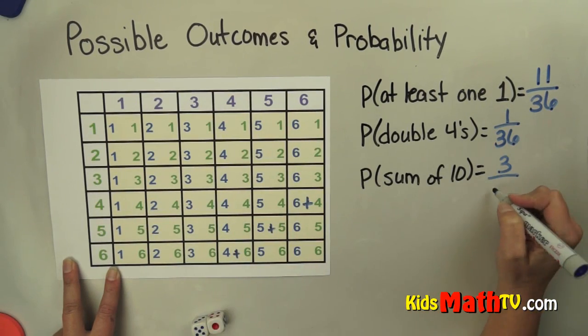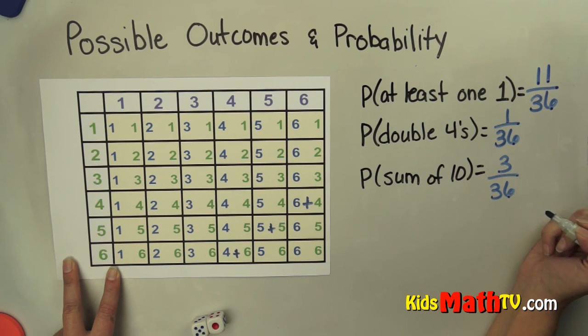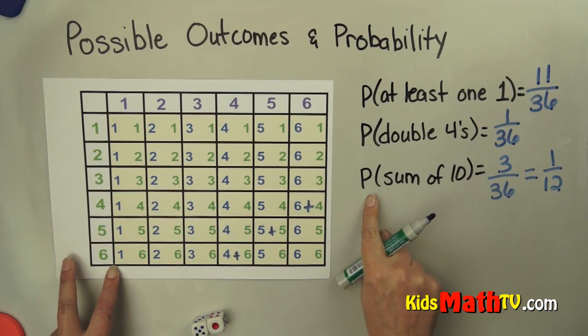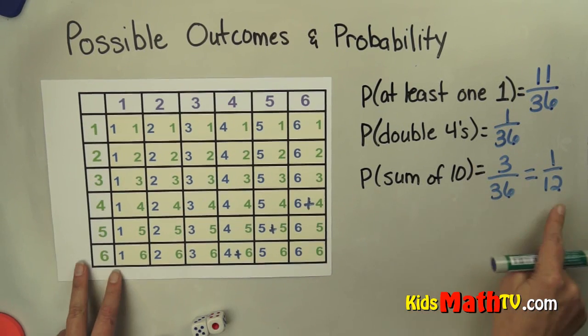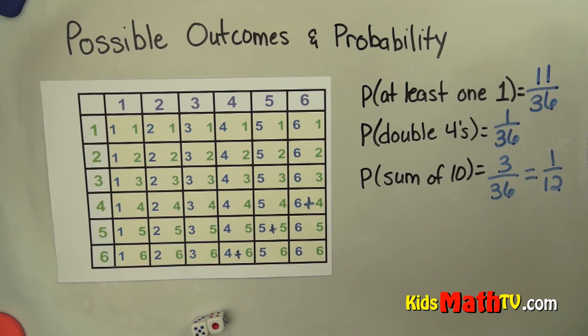So there are 3 possibilities of getting 10. And there are still 36 total possible outcomes. And I can actually reduce this to 1 out of 12. So the probability of getting a sum of 10 is 1 out of 12. And that's the end of this lesson on possible outcomes and probability.